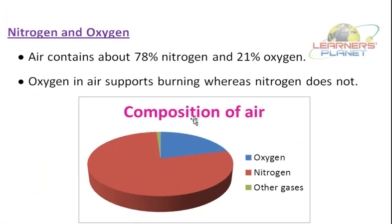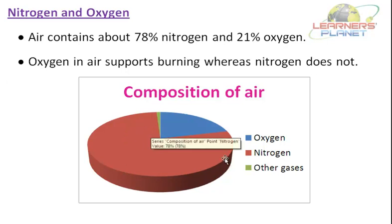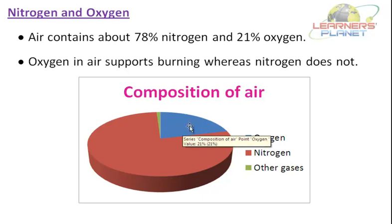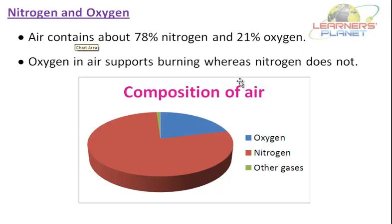Air comprises mainly nitrogen and oxygen. Here you can see a pie chart showing the composition of air. The red colour indicates the percentage of nitrogen in the atmosphere, and the blue colour indicates the percentage of oxygen. The remaining gases make up 1%. Air contains about 78% nitrogen and 21% oxygen. Amazingly, oxygen in air supports burning whereas nitrogen does not.